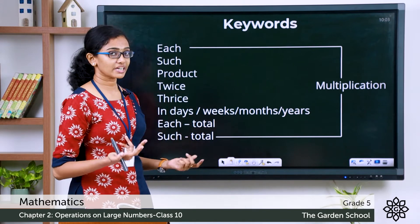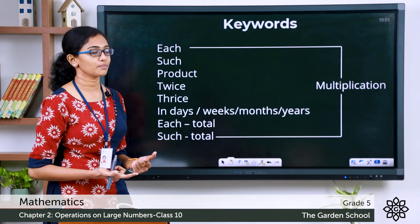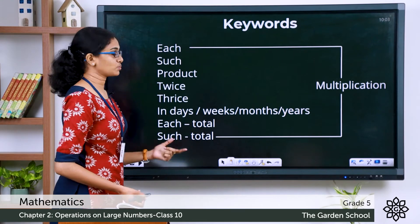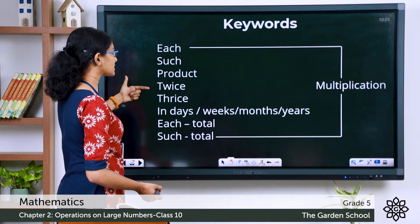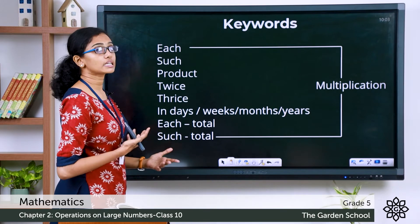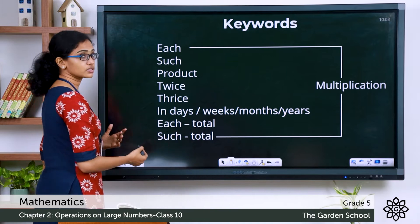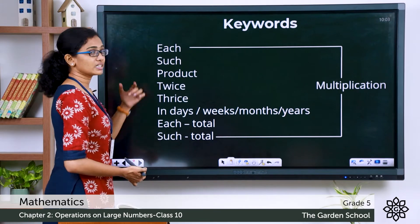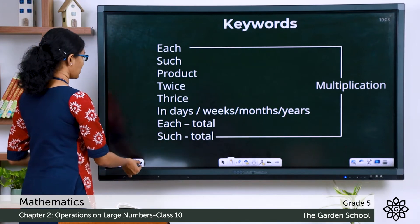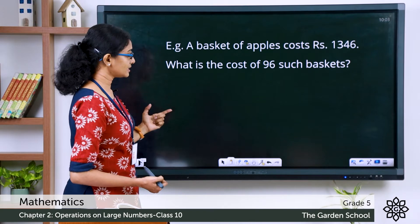These are some keywords you can see in multiplication word problems: 'each', 'such', 'product', 'twice', 'thrice', 'in days', 'in weeks', 'in months', 'in years', and a combination of 'each'. You may also need to find the total — 'total' is another keyword you will see in multiplication word problems. Let's look at one example now.